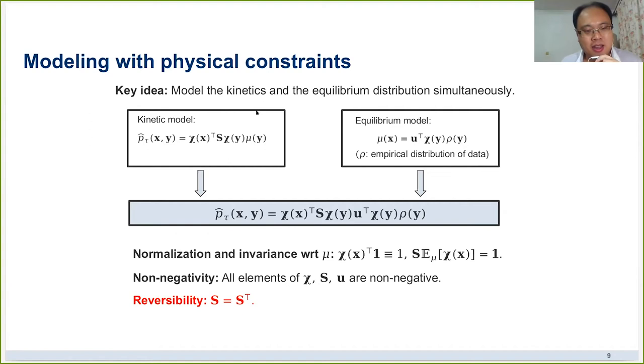So in this paper, we try to solve this problem by some techniques. The key idea here is that we try to model both the kinetic model and the equilibrium distribution of the system simultaneously and explicitly. We have two models. The first model is a kinetic model. This is exactly just as the original Koopman models. The key difference comes from the equilibrium distribution model. Here we assume that the invariant distribution or the stationary distribution of the system can be obtained from the reweighting of the empirical distribution of the data. Here μ is the empirical distribution of the data and χ is the basis functions and u is some trainable vector. Now we can combine the two models together, and finally, we will get such a complete expression of the transition density.